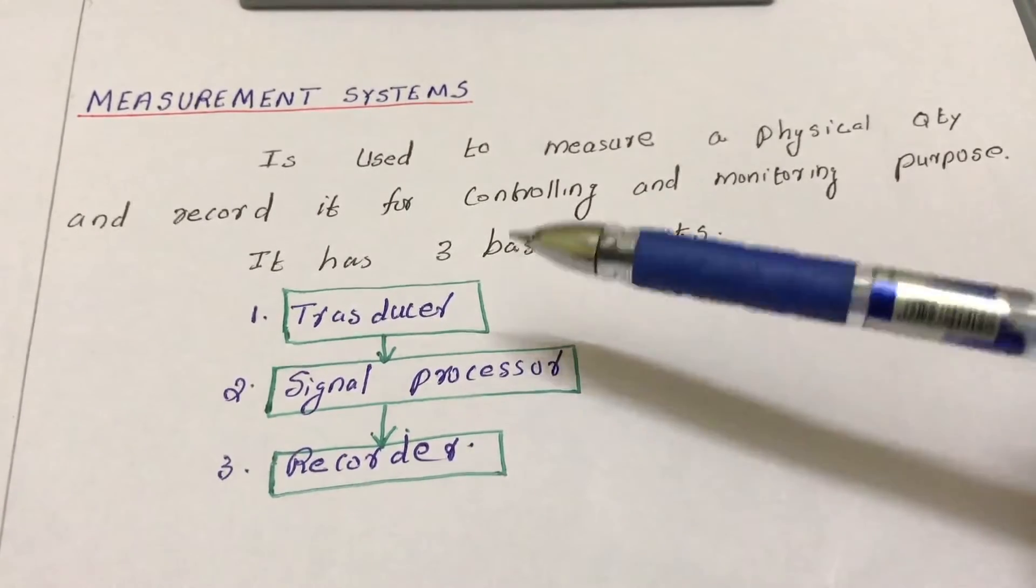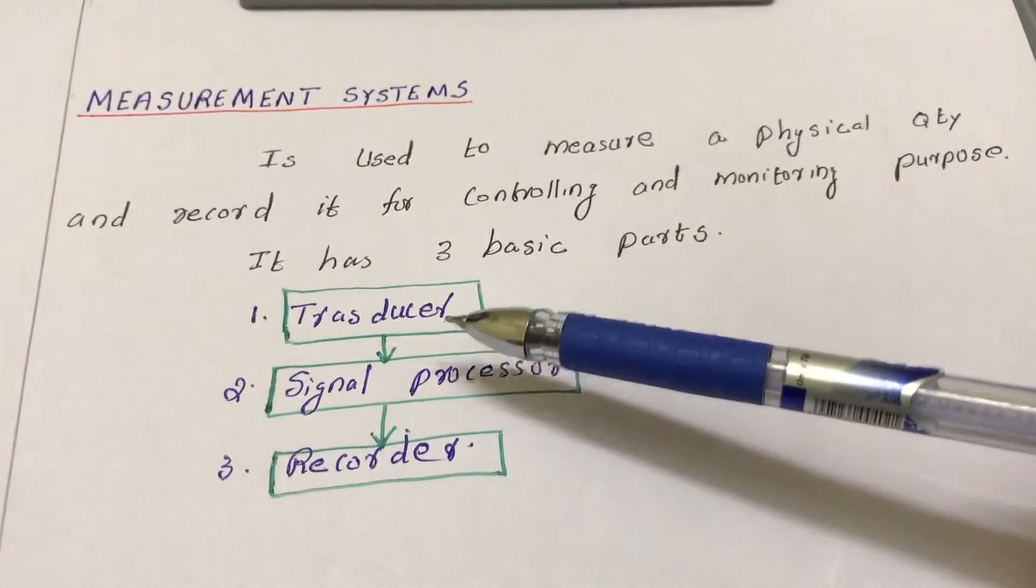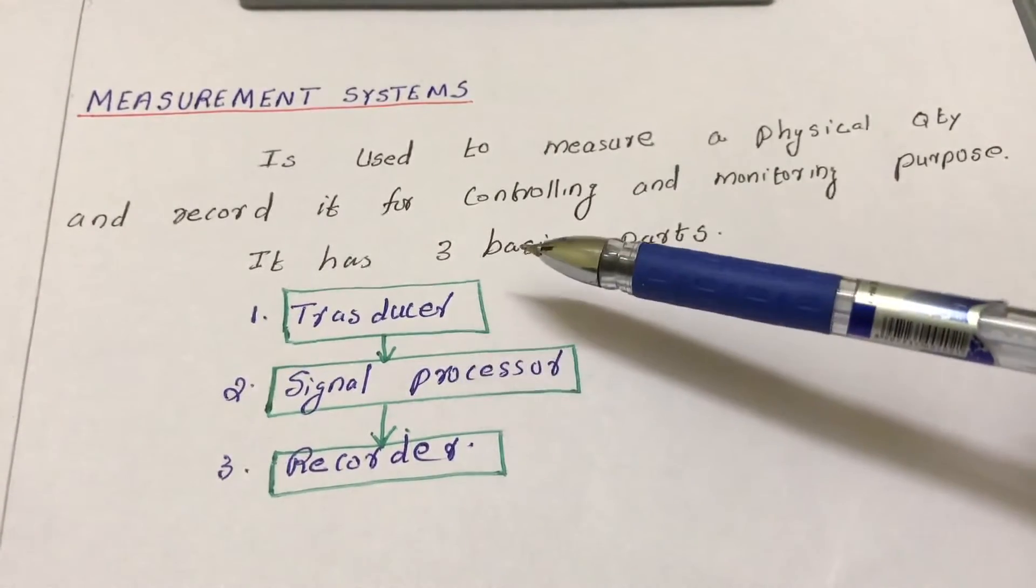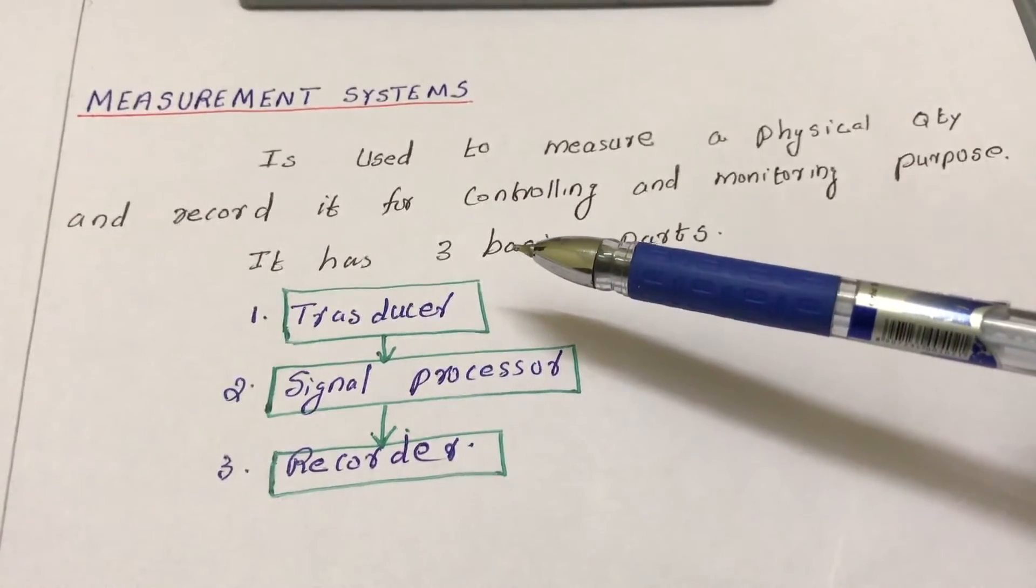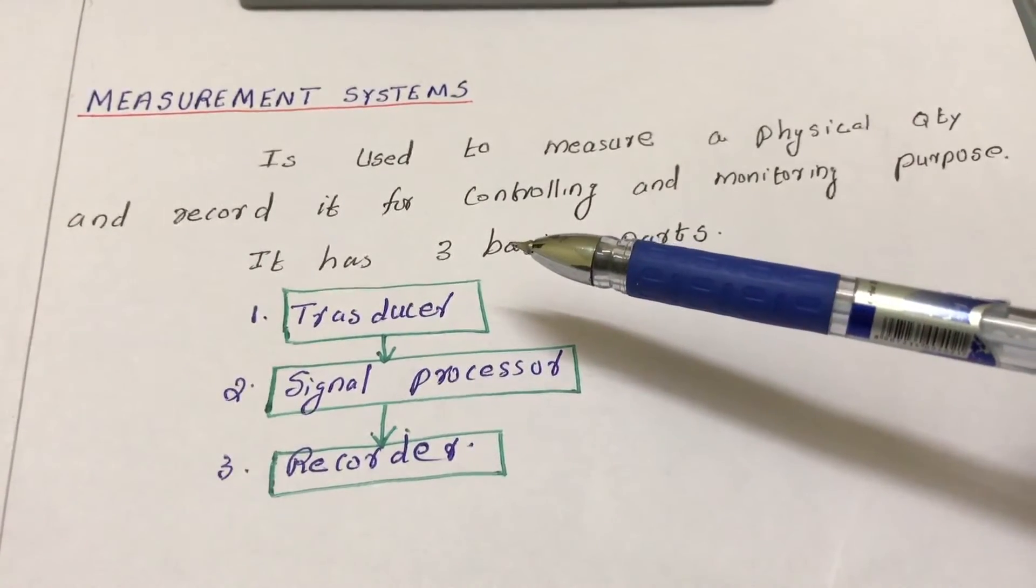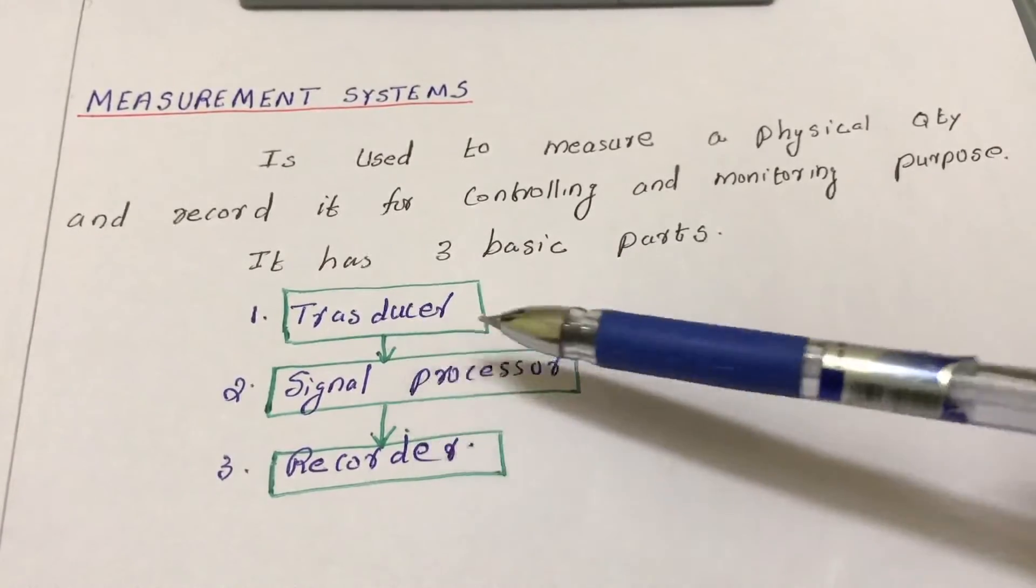The signal processor usually performs filtering operations. Whatever output we are getting from the transducer, it filters it and also amplifies it because the output voltage will be very minute. We have to amplify it for further conditioning of the output we got from the transducer. That's what the signal processor does.